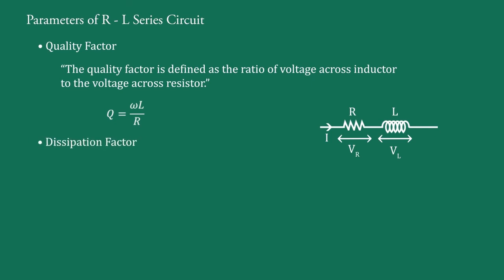Now, fourth parameter is dissipation factor DF. Dissipation factor is inverse of the quality factor. Therefore, taking reciprocal of Q, we get DF equals 1 upon Q and which is equal to R upon omega L. This is the dissipation factor for series RL circuit.